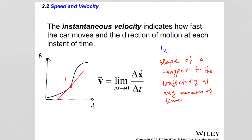Instantaneous velocity is simply the slope of a tangent to the trajectory at any moment of time. This gives more information than average velocity because it can be calculated at any point during the motion. Dealing with instantaneous velocity requires calculus, so we won't use it extensively in this course, though it's important to understand its meaning — especially for those taking calculus-based physics.